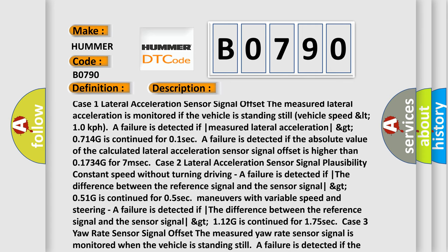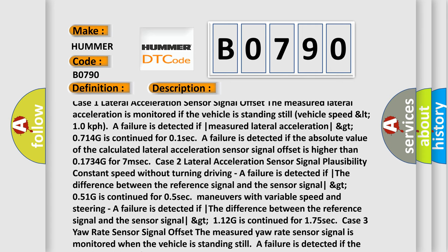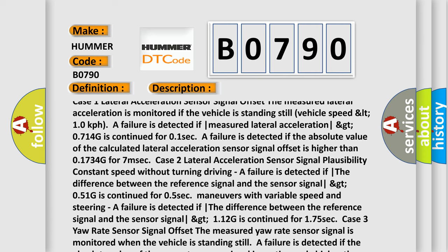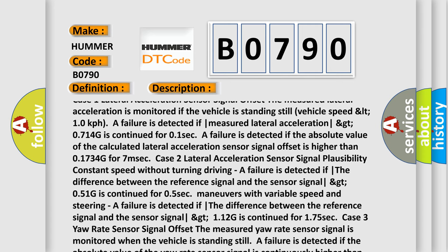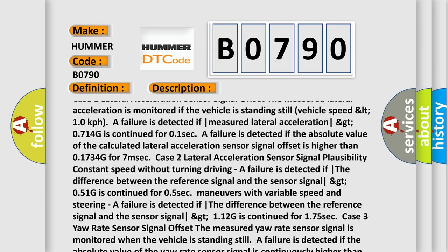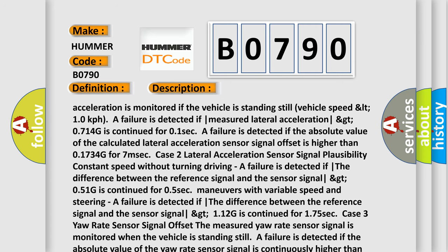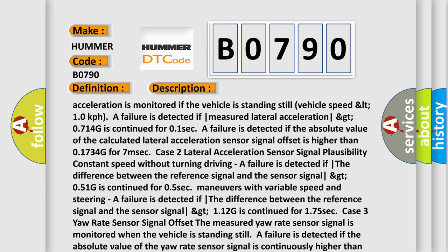Case 2: Lateral Acceleration Sensor Signal Plausibility. Constant speed without turning driving: A failure is detected if the difference between the reference signal and the sensor signal greater than 0.51G is continued for 0.5 sec. Maneuvers with variable speed and steering: A failure is detected if the difference between the reference signal and the sensor signal greater than 1.12G is continued for 1.75 seconds.